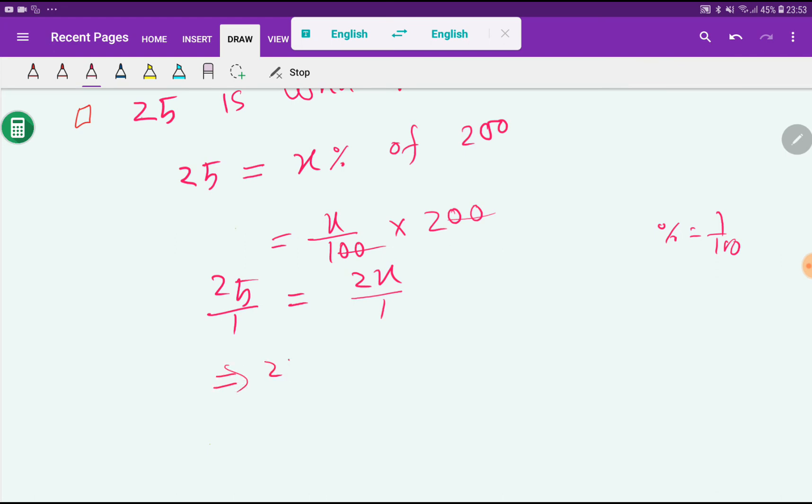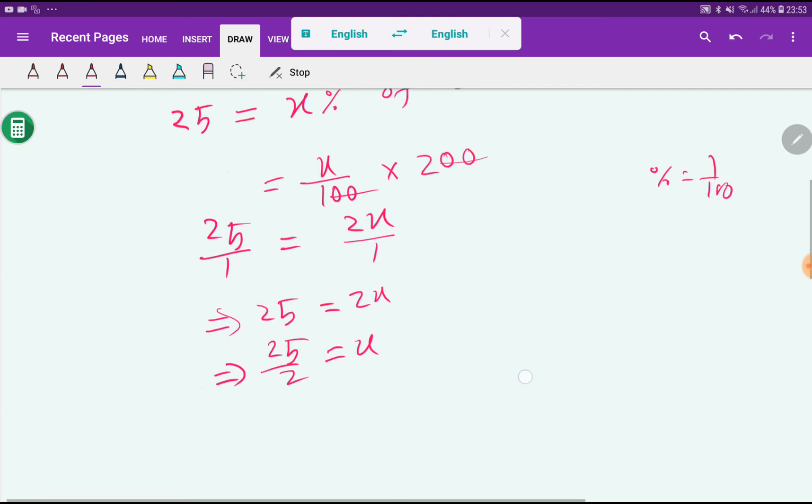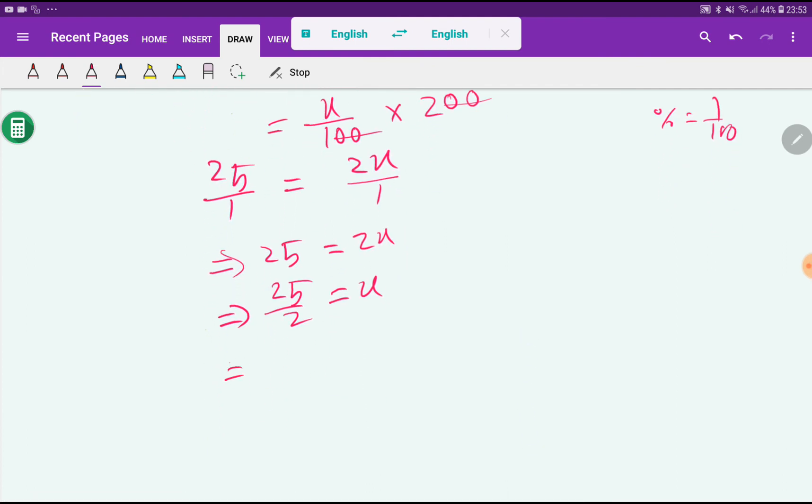Look at here: 25 equal to 2x. So what will be the value of x? We have to divide both sides by 2. The value of x equals 25 by 2.